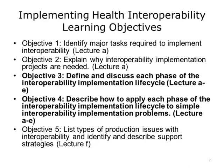This unit will cover the following learning objectives: number one, identify major tasks required to implement interoperability; number two, explain why interoperability implementation projects are needed; number three, define and discuss each phase of the interoperability implementation life cycle; number four, describe how to apply each phase of the interoperability implementation life cycle to simple interoperability implementation problems; and number five, list types of production issues with interoperability and identify and describe support strategies.